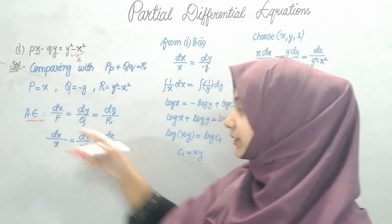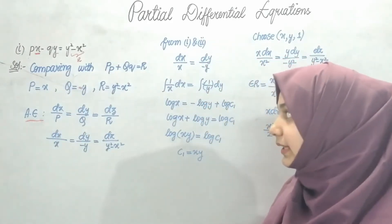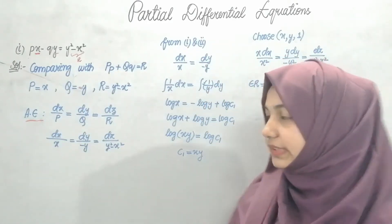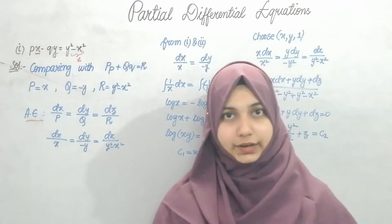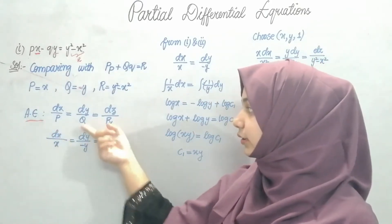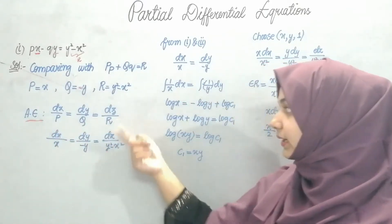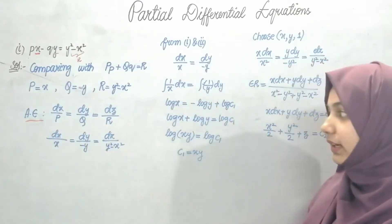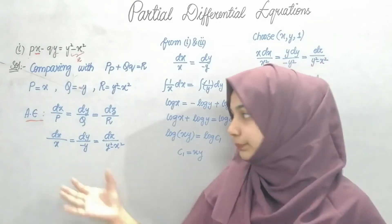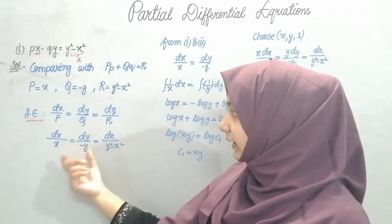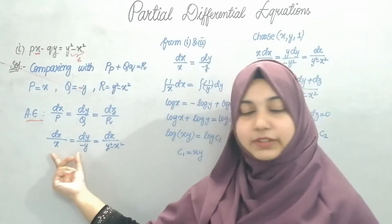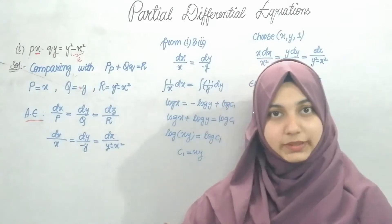Now let's write the auxiliary equation: dx/P equals dy/Q equals dz/R. So P is x, Q is minus y, and R is y squared minus x squared. Now let's see if we can apply the method of grouping.